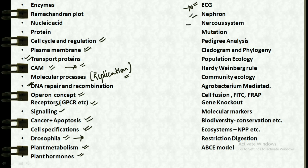The next topic is nephrons, followed by the nervous system. Then we have mutation, pedigree analysis, cladogram and phylogeny. We can also find topics from population ecology and the Hardy-Weinberg rule.